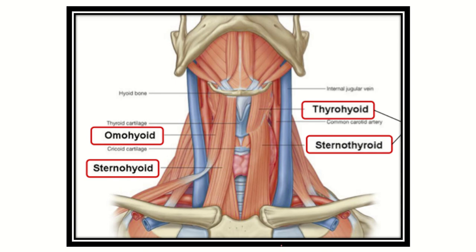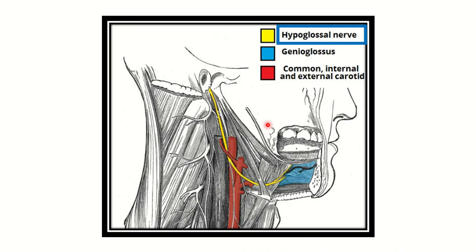Here we can see the internal jugular vein and the carotid artery — the contents of the carotid sheath. Very close to the carotid sheath are the thyrohyoid, sternothyroid, omohyoid, and sternohyoid muscles. We can also see the hypoglossal nerve — the 12th cranial nerve — which is very close to the internal carotid artery, which is located within the carotid sheath.